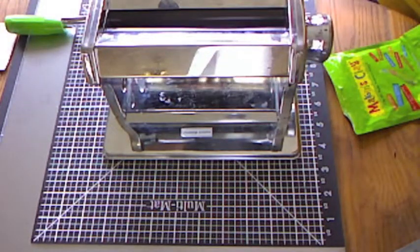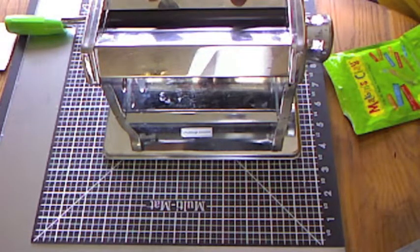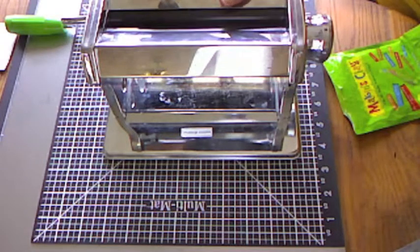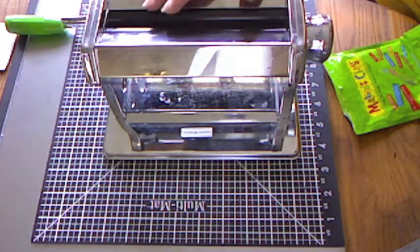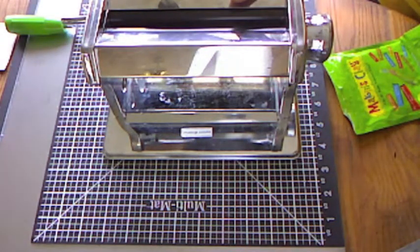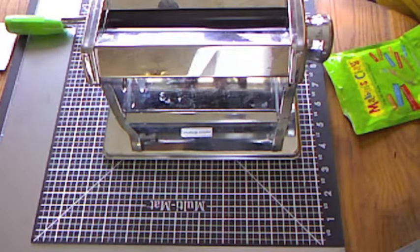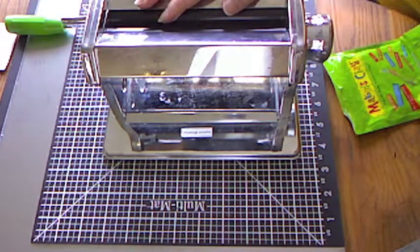To roll our clay we're going to use the Macon's Professional Ultimate Clay Machine. This machine has nine different thickness settings and it's non-stick, which makes it super easy to use with Macon's Clay and any brand of polymer clay. Let me get it set up and we'll go ahead and roll our clay.